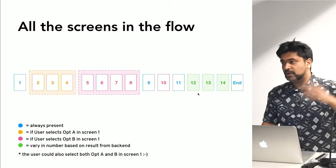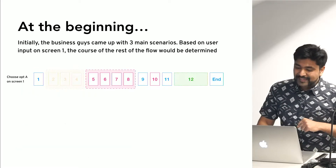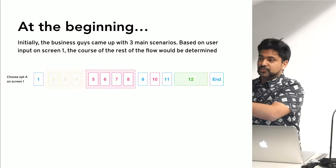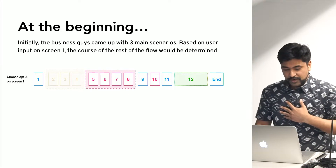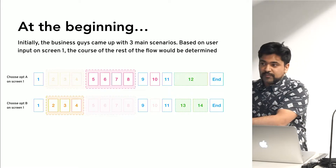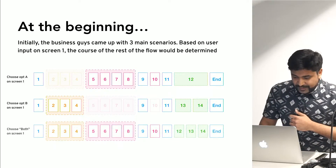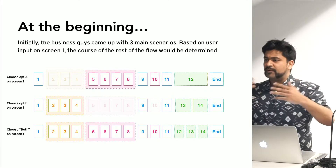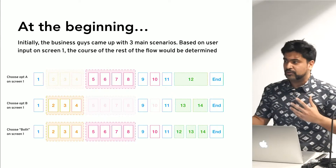So we built version one, it was great, we launched it. And then they were like — we only want you to show one green screen if users chose option A. Okay, not a big deal. But then when they chose option B, we wanted you to show these two green screens. And then finally, if they chose a third option, we want you to show everything. So already there was enough business logic routing you around — although not untenable.